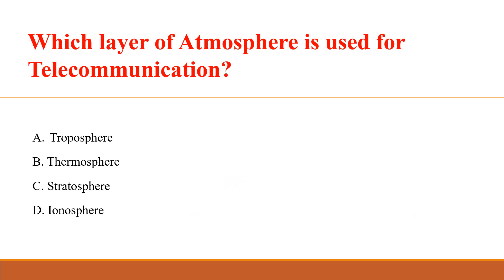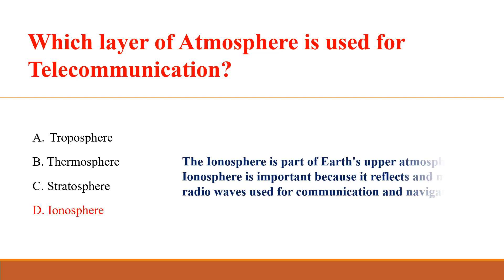Which layer of the atmosphere is used for telecommunication? Answer: D. Ionosphere. The ionosphere is a part of Earth's upper atmosphere. It is important because it reflects and modifies radio waves used for communication and navigation.